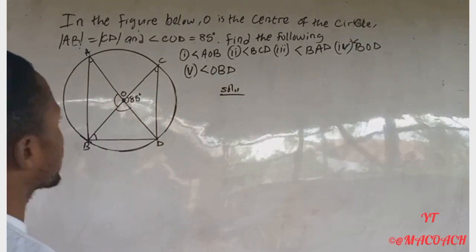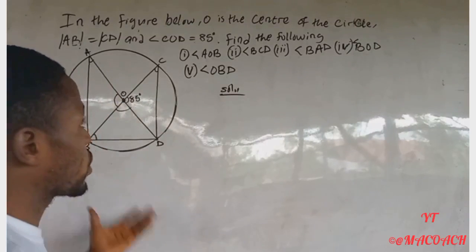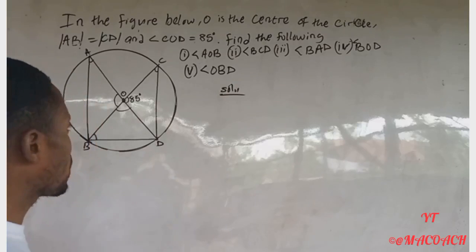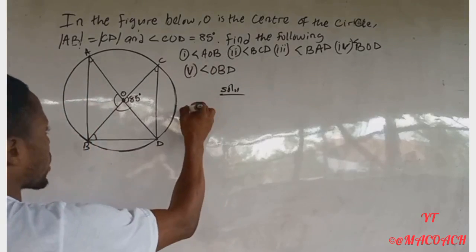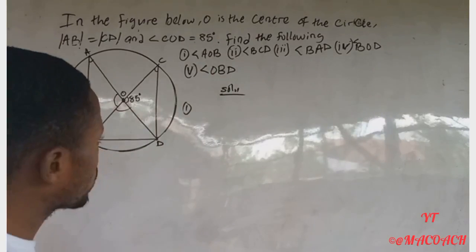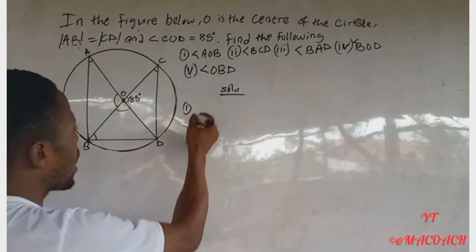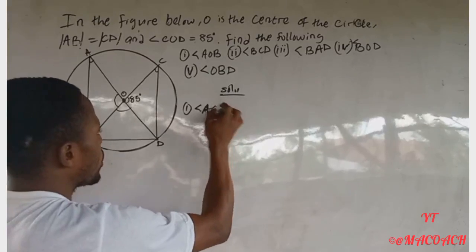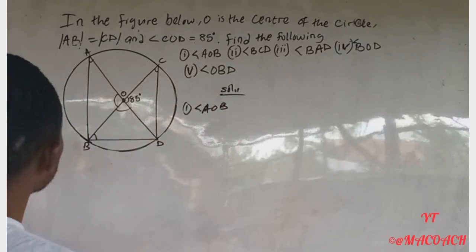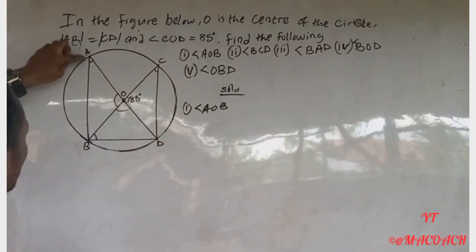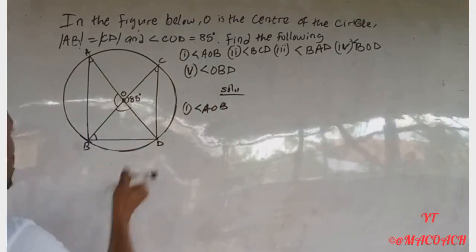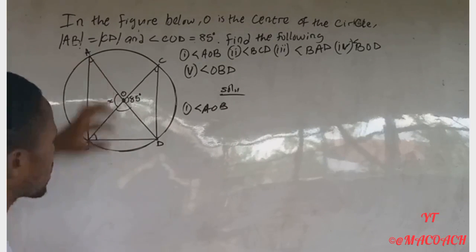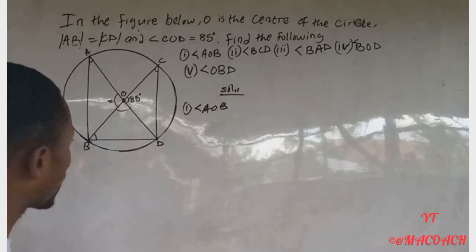This question is from cyclic geometry. Let's solve question one — we want to find angle AOB. So we are looking at this angle here; let's call it S for now.